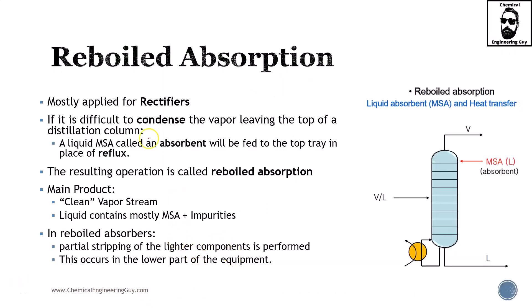Reboil absorption is mostly applied for rectifiers. Remember, the rectifying section is the top section of the distillation column, in which we need to have a liquid going on top — in this case, our MSA liquid, the absorbent. Now we are going to have a reboiler here, so it's kind of similar to the rectifying section. We also have a stripping section here with the reboiler, where we have a liquid forming a gas or vapor which tends to go upwards.